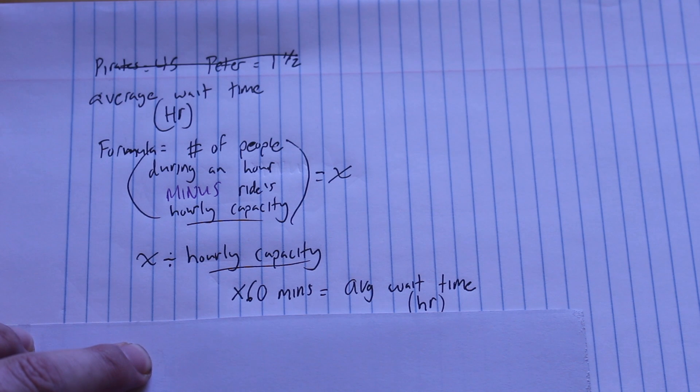So you take the number of people who want to go during an hour, subtract the ride's hourly capacity, take that whole number, divide it by the hourly capacity, multiply that by 60, and you'll get the number of minutes.